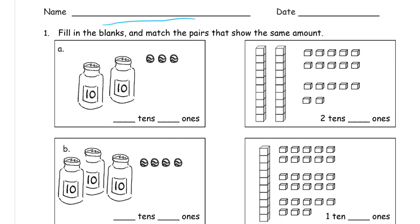Number 1, fill in the blanks and match the pairs that show the same amount. So what I'm going to do is go through this and fill in the blanks, and then we'll go back and match all the pairs. Looking at A, we have two 10s, so these are bottles of marbles it looks like. There's two 10s and three 1s.